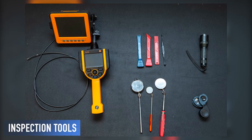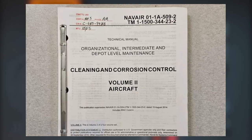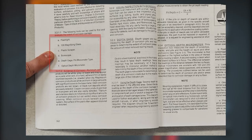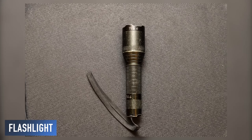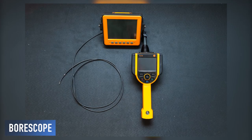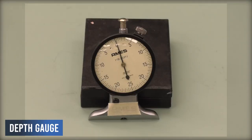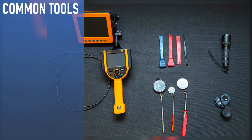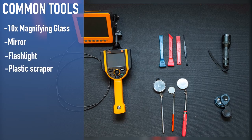Now that the area has been properly prepared for the inspection, we need to verify that the appropriate tools are available. In accordance with NAVAIR 01-TAC-1-ALPHA-TAC-509 Volume 2, the following tools will be used to inspect and evaluate the extent of corrosion damage: flashlight, 10x magnifying glass, plastic scraper, boroscope, depth gauge, pin micrometer type, and optical depth micrometer. To identify corrosion, a magnifying glass, a mirror, a flashlight, plastic scraper, and occasionally a boroscope are the tools of choice of the maintainer.